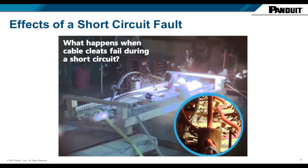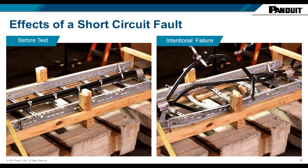The following pictures, from very high-speed resolution cameras during testing, show what happens when a cleat fails — fortunately captured in a lab setup — illustrating the violence of the electromagnetic force. This slide shows a cable cleat test rig fixture more clearly. You can see that the cables are neatly contained within the ladder rack and cable tray, aligned, and everything is safe as it should be.